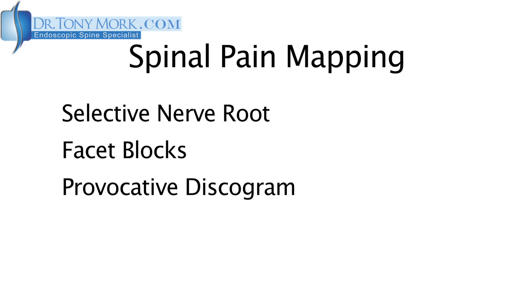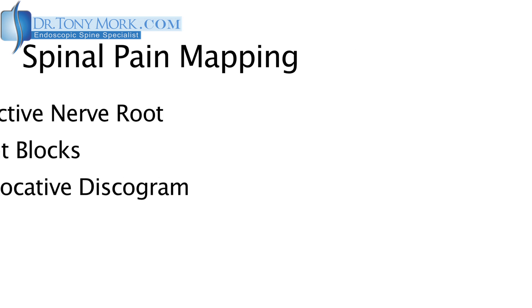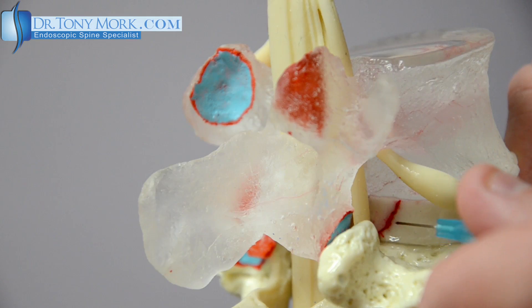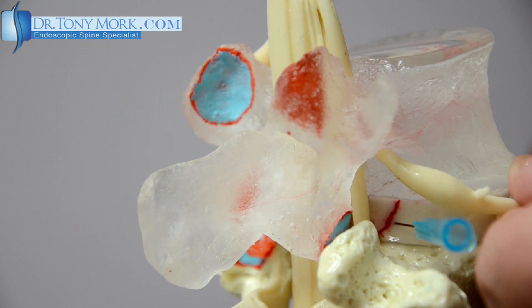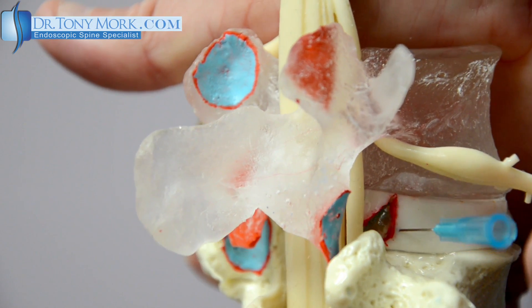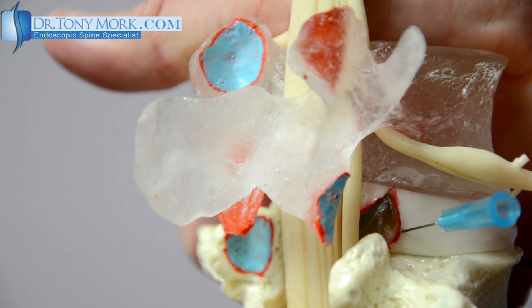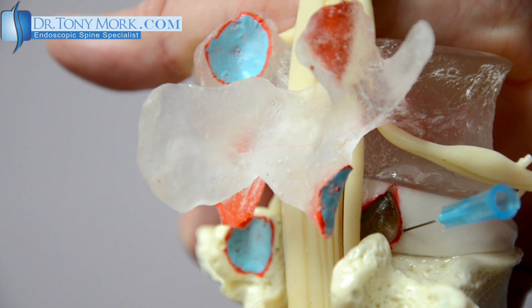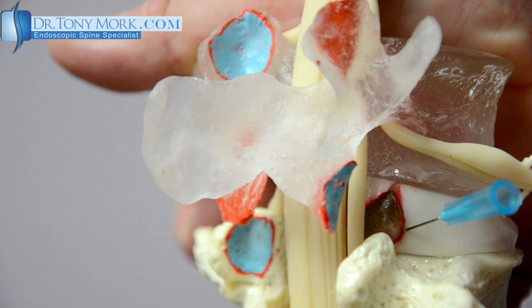The third type of spinal pain mapping is a provocative discogram. Although there is some controversy about this technique, it involves putting a needle into the disc as seen here. Here we see a disc bulge coming out, and you can see that the dye placed into the disc may leak out into this particular area. We could see it on a CT discogram, which often follows a provocative discogram. It's called provocative because the dye injected under some pressure can oftentimes recreate the particular back pain that you might experience.